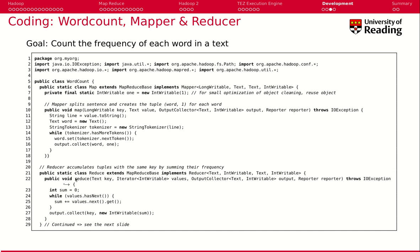And the reducer does exactly what we have done before. It takes a key, which is our word, and it takes values, which are of type IntWritable, and it sums up the values, creating one new output which is the key and the sum at the end.